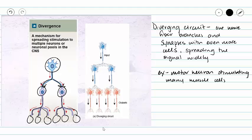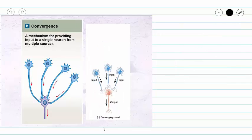This is how one motor neuron can stimulate thousands of muscle cells. So as we diverge, we are going to be communicating with more and more cells. In a converging circuit, we are going to do the opposite.